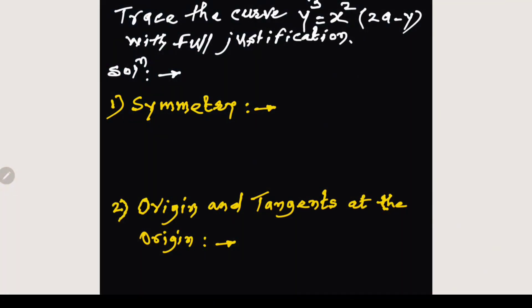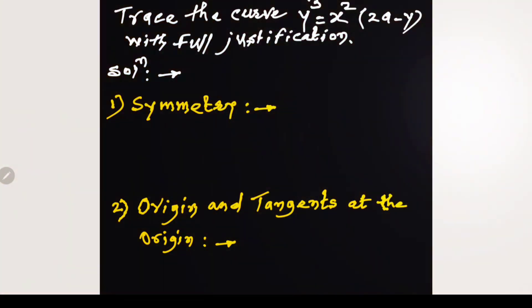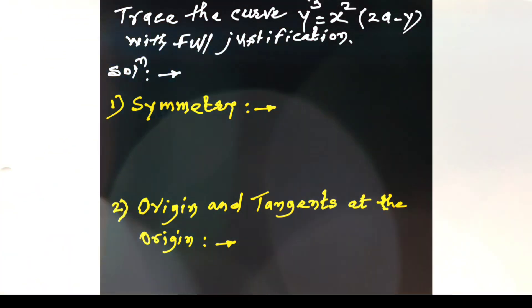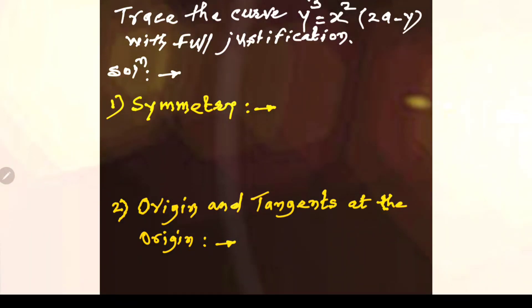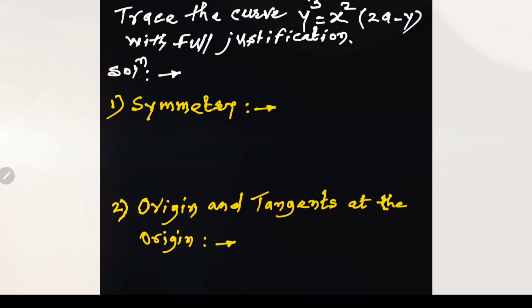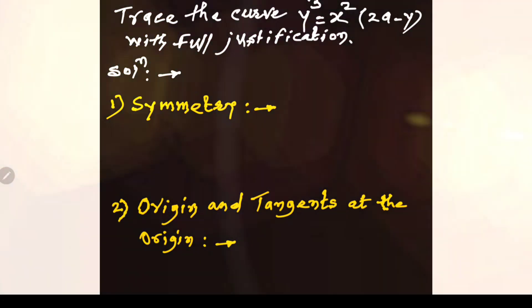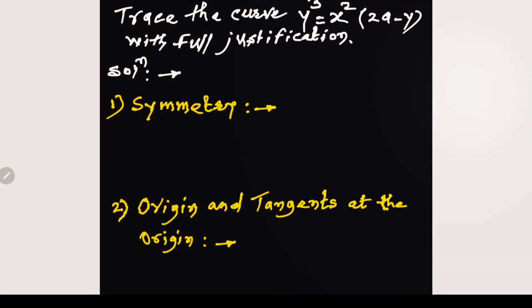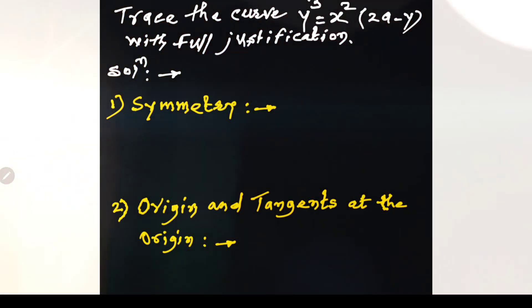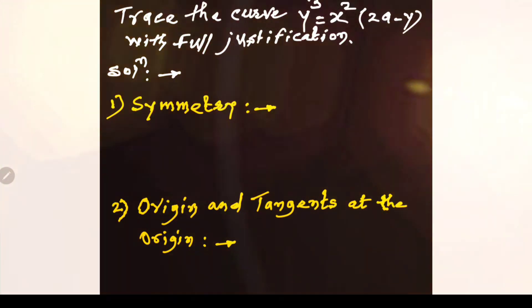Hello friends, myself Rajendra Mahadhan presenting my video on Cartesian curve tracing. Example: trace the curve y³ = x² · (2a − y) with full justification.